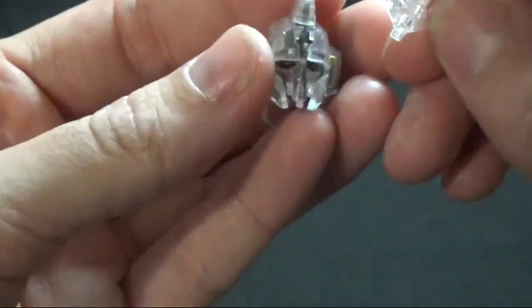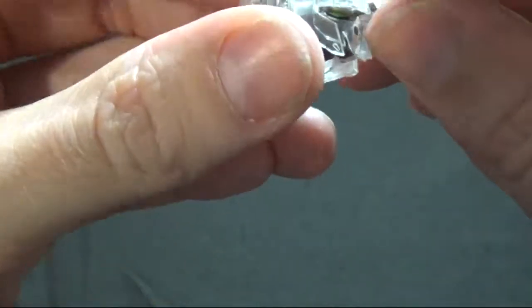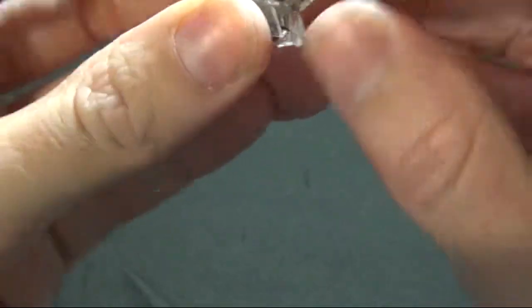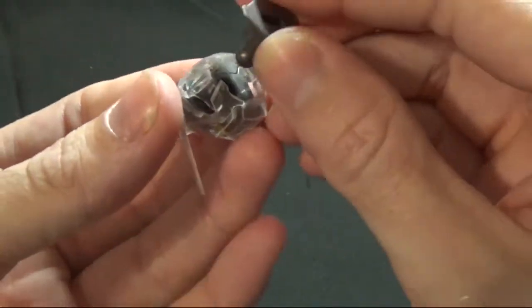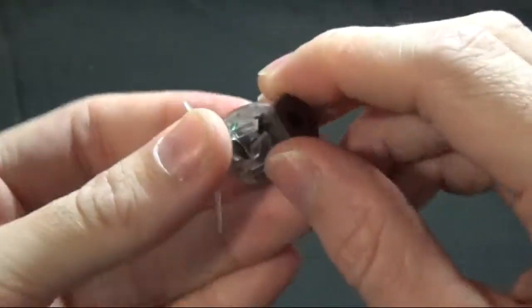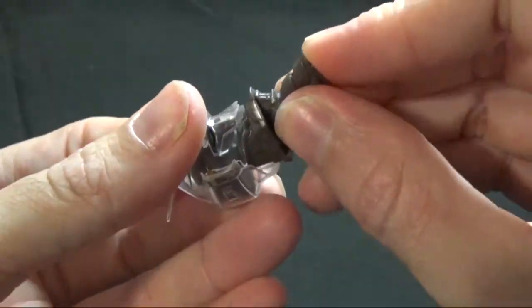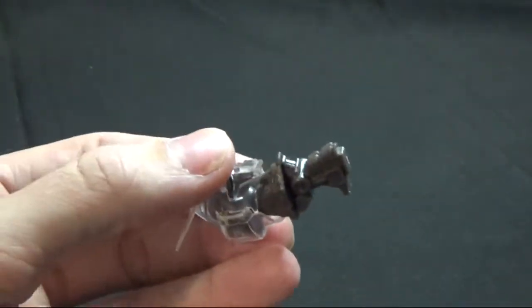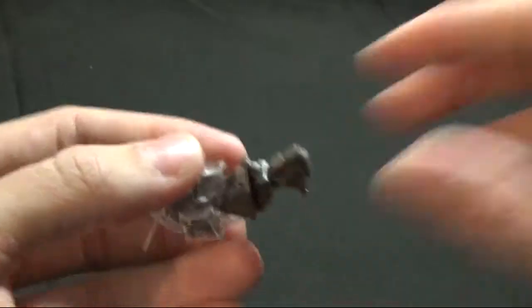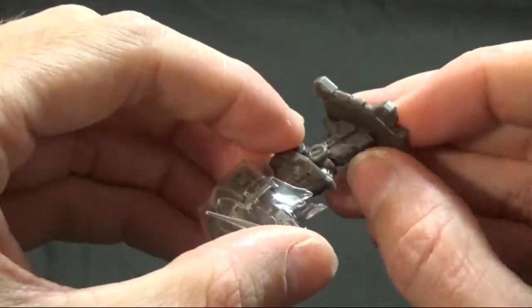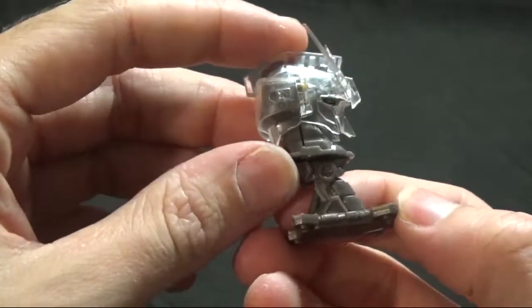That little v-fin is a little easier to pop back off. Just attach the head to the neck. Make sure we put that on right. Really don't need the instructions, it's self-explanatory. There we go, our little dude's put together.